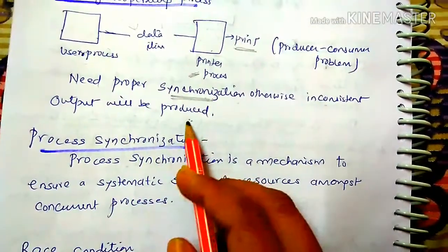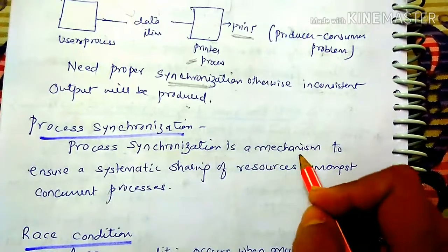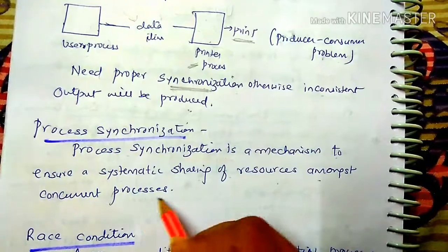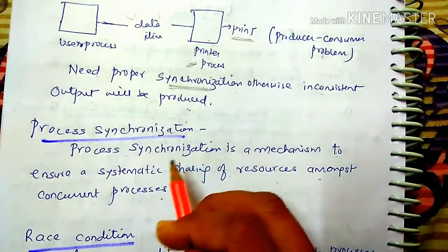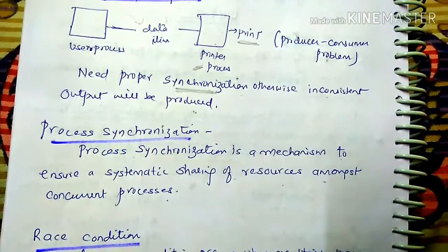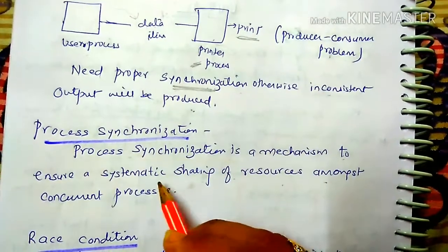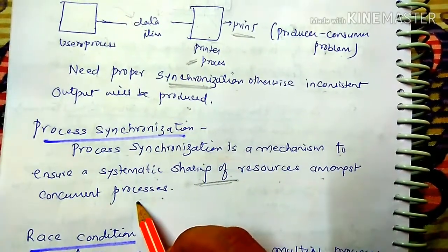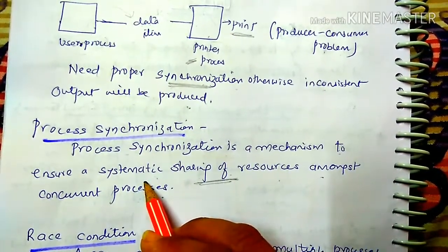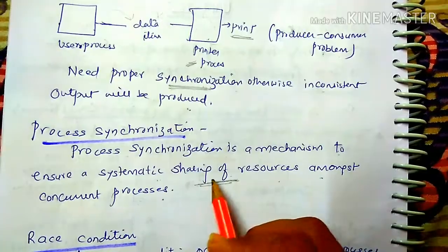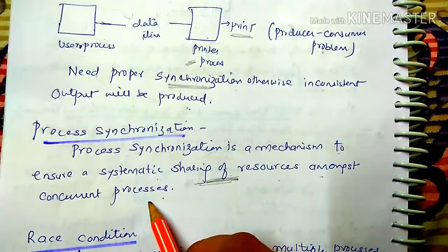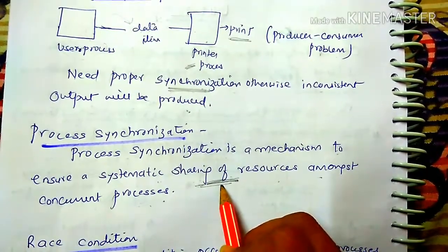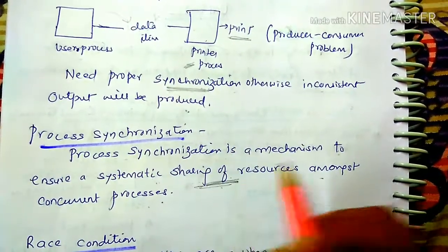What is process synchronization? Process synchronization is a mechanism — a technique — that ensures resources are shared among concurrent processes in a systematic way. When resources are shared properly among concurrent processes, our output will be consistent rather than inconsistent.